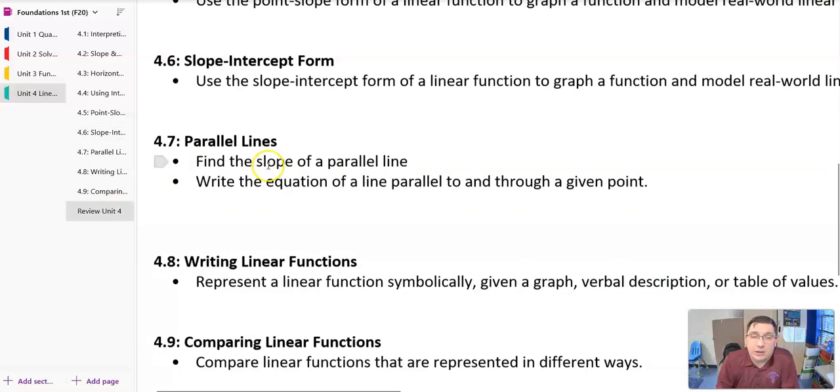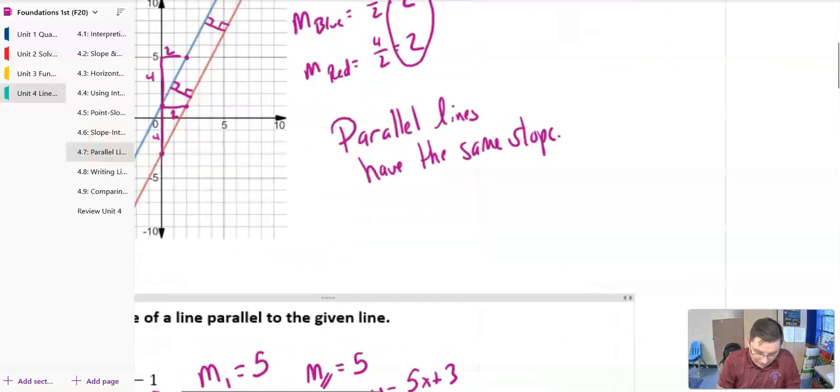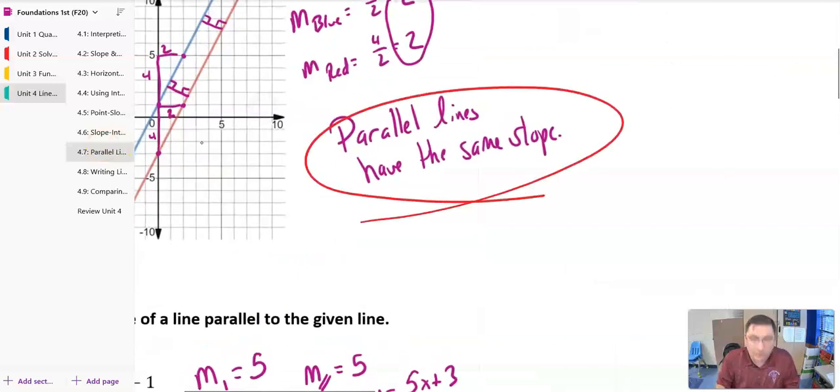Remember that we want to be able to find the slope of a parallel line, and we also want to be able to write the equation of a line parallel to and through a given point. And so in this section, remember that parallel lines have what? Parallel lines have the same slope. So if the first line has a slope of 2 thirds, the parallel line has to have a slope of 2 thirds.